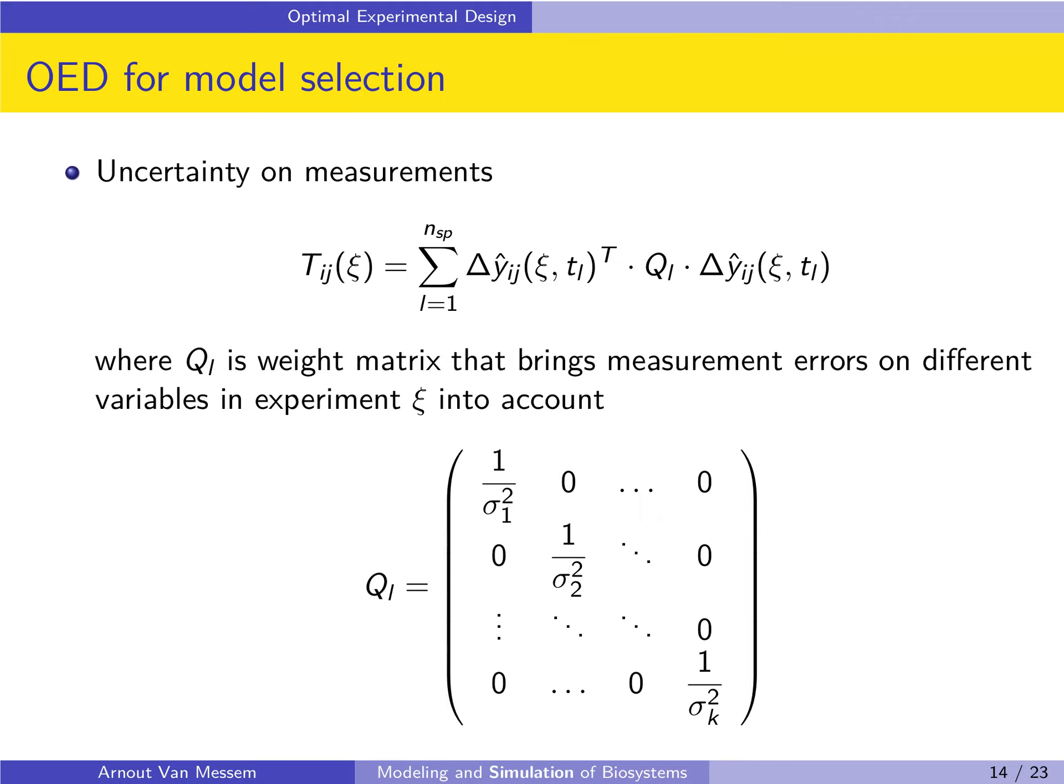Let us first look at the uncertainty on the measurements. To introduce this uncertainty, we add a matrix Q_L to the definition of the objective function. Q_L is the weight matrix that takes the measurement errors on the different variables in the experiment ξ into account. The uncertainty on measurements is normally expressed through the variance of the measurements, and so the weight matrix will be a diagonal matrix with, on the diagonal, one divided by the variances of the different variables. So we have 1/σ². If we have a lot of uncertainty, then we have a large variation, and so in cases of high uncertainty, we will attribute a low weight to this variable.